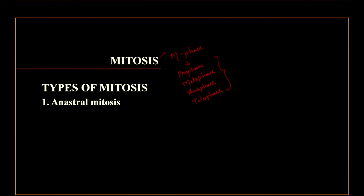Today we are going to discuss about types of mitosis. The first type is anastral mitosis. 'Anastral' means absence or lacking asters, so there won't be formation of asters. It is found in plants. There won't be any aster formation, but there will be formation of spindle fiber.